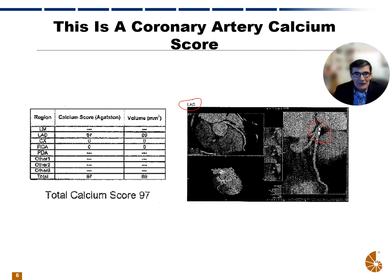What we're looking for is a numerical score, and it may be designated by which coronary artery it is in. In the box to the left, you can see that the LAD has the coronary calcium and the score is 97. In the picture to the right, you can see that the really dense white material is the calcium showing up — that's where the problem is in this particular case. We use these numerical scores to determine what kind of risk the applicant may be at.